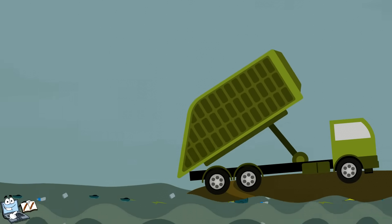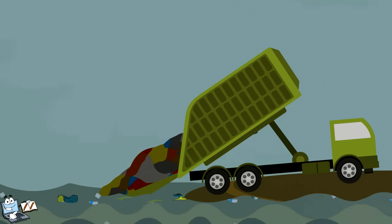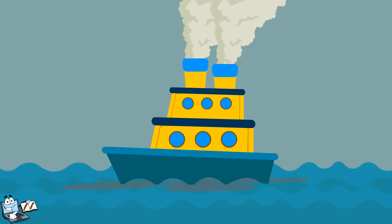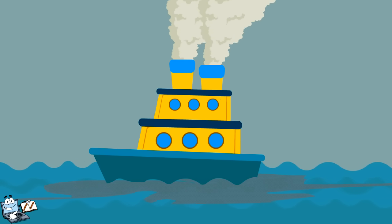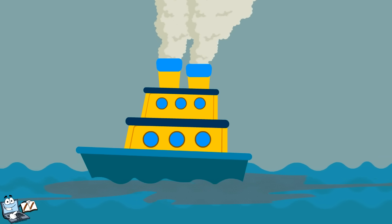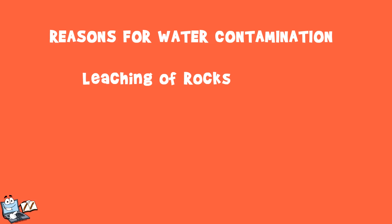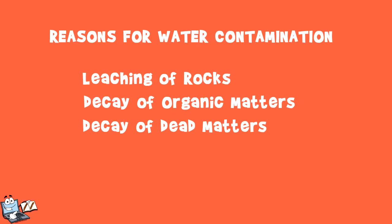Pollutants get into water mainly by human causes or human factors. Oil is also a big pollutant for polluting the water. Leaked oil from ships or other modes flows to the sea or ocean and affects the whole water. There are some other reasons too for water contamination, like leaching of rocks, decay of organic matter, decay of dead matter, silting, oil erosion, and more.